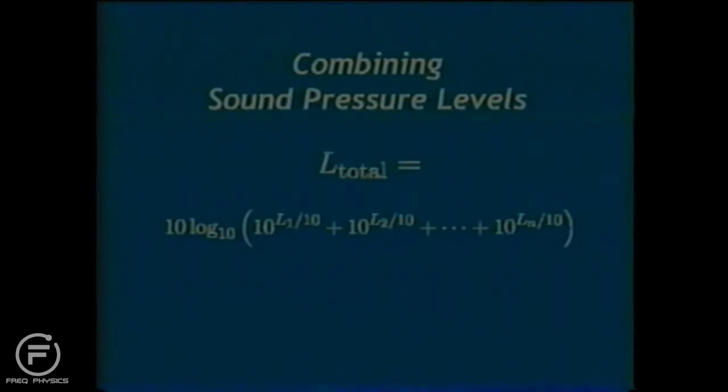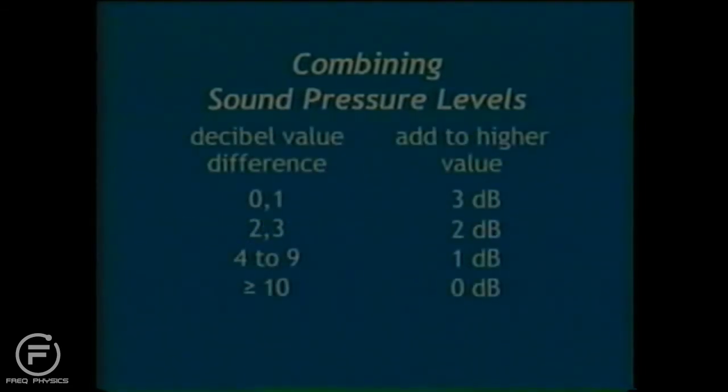For applications requiring only integer decibel accuracy, it's also possible to apply some simple steps to calculate an approximate total sound pressure level. First, find the decibel difference between two sound pressure levels. You then add an adjustment factor to the higher of the two sound pressure levels. If the decibel difference is 0 or 1, then you add 3 dB. 2 or 3, you add 2 dB. And between or equal to 4 and 9, you add 1 dB. If the difference is 10 dB or greater, you can safely ignore the lower level source. Under these conditions, the higher level source is said to mask the lower one.